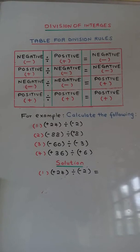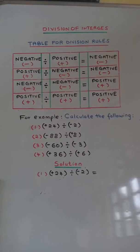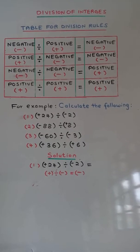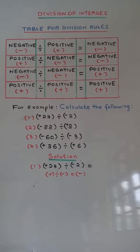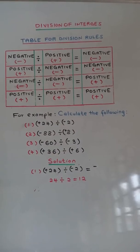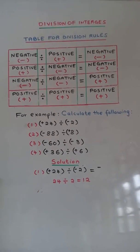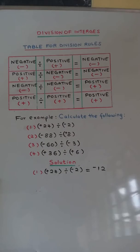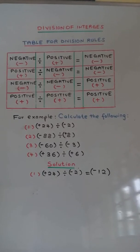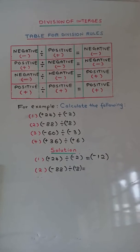Positive 24 divided by negative 2. Positive divided by negative is equal to negative. 24 divided by 2 is equal to 12, so the answer is negative 12.